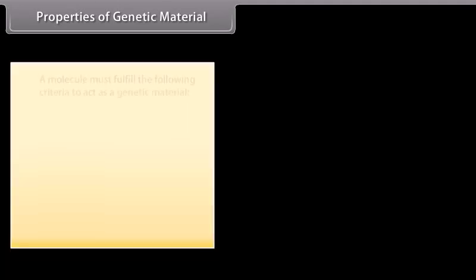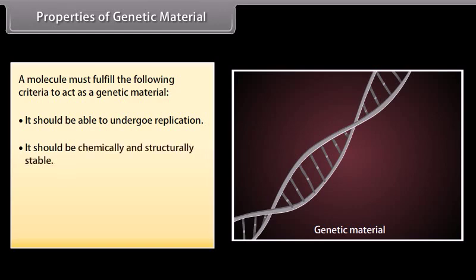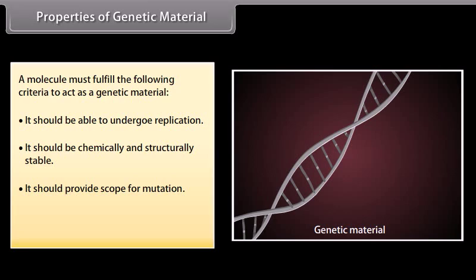A molecule must fulfill the following criteria to act as a genetic material: it should be able to undergo replication; it should be chemically and structurally stable; it should provide scope for mutation; and it should be able to express itself in the form of Mendelian characters.